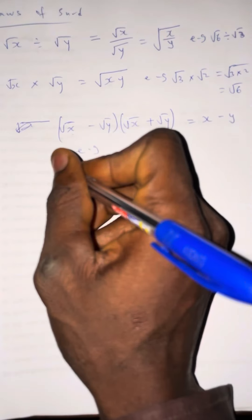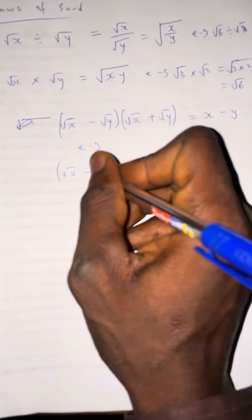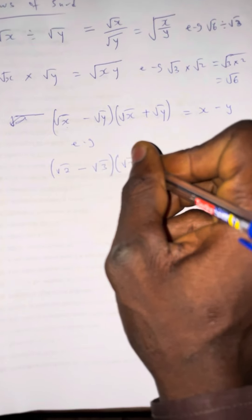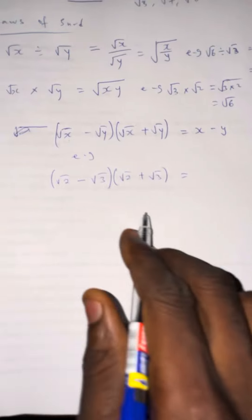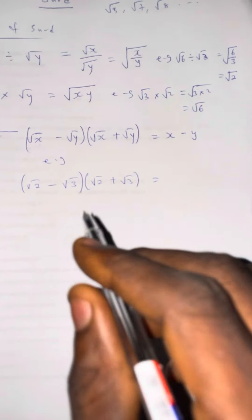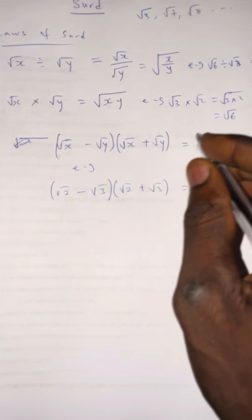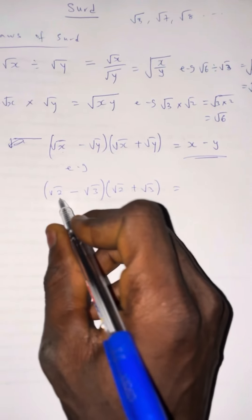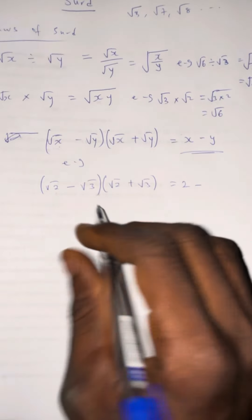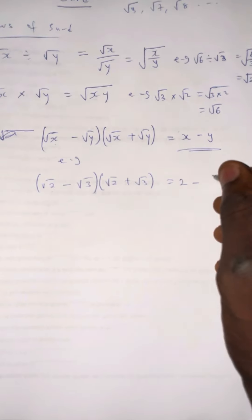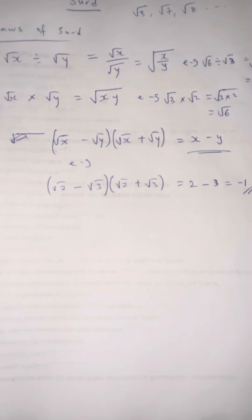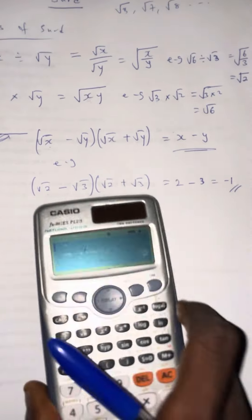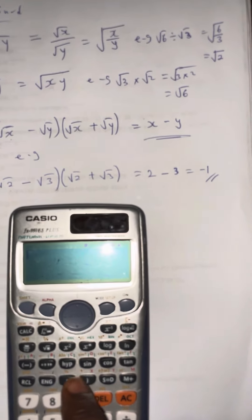For example, if you have (root 2 minus root 3) multiplied by (root 2 plus root 3), using this shortcut, the answer is the first number, 2, minus the second value, 3. So the answer is equal to minus 1. If you use the normal expansion method or press on the calculator, you will arrive at the same answer.